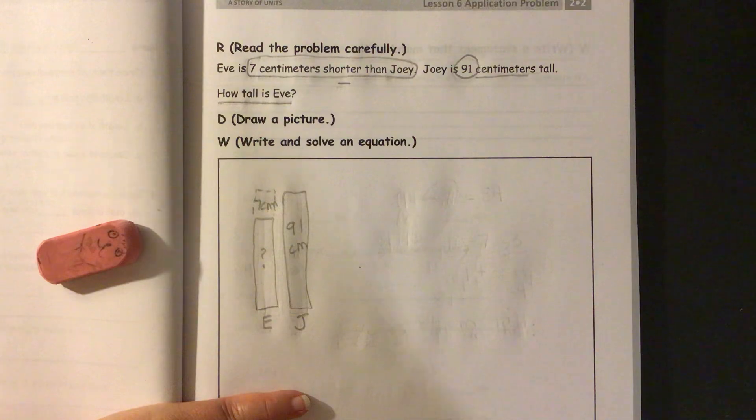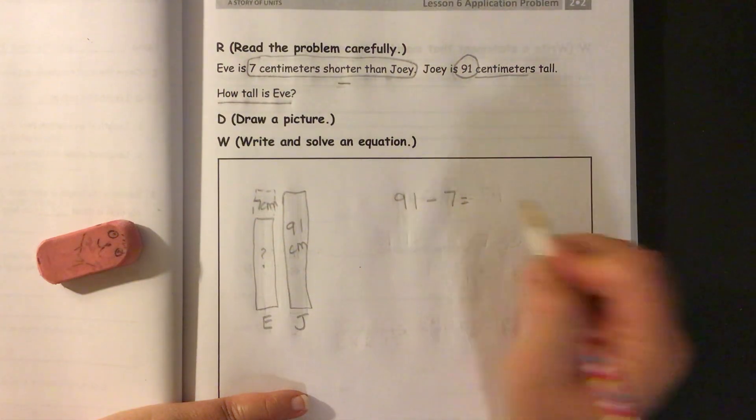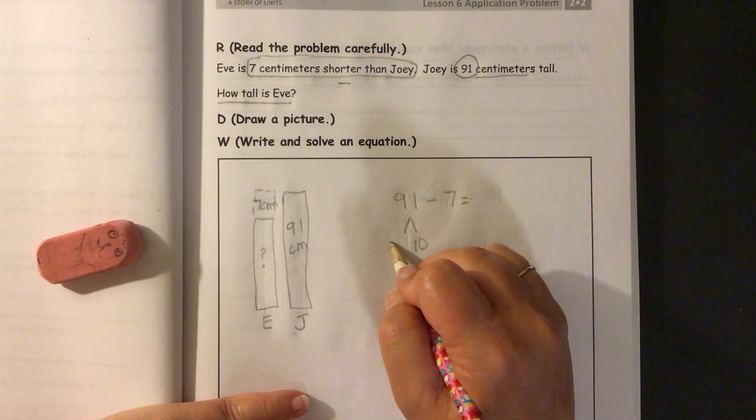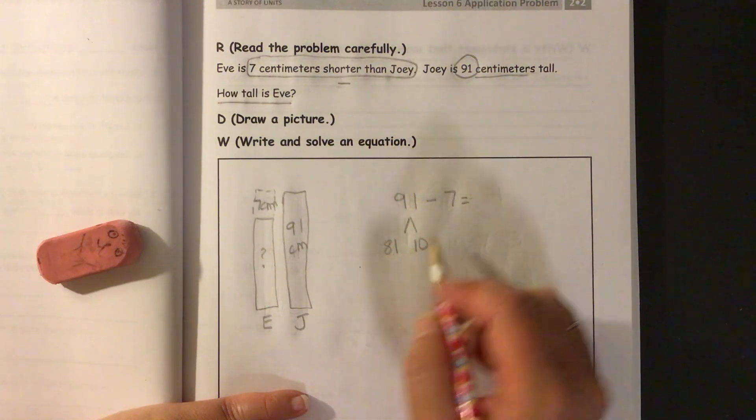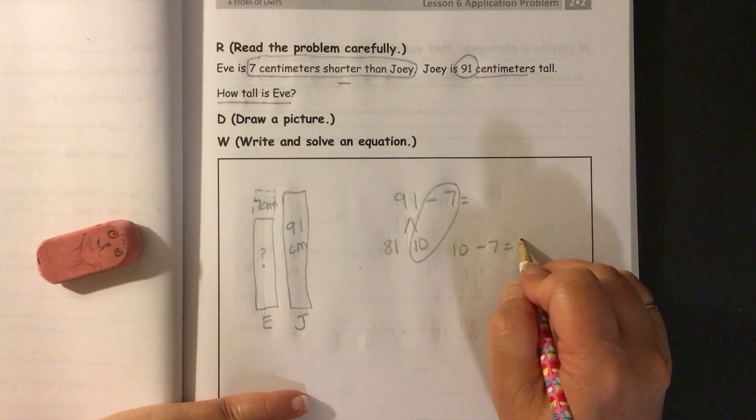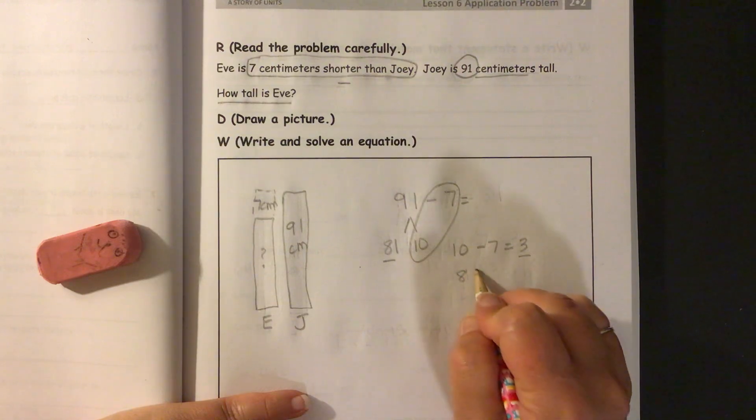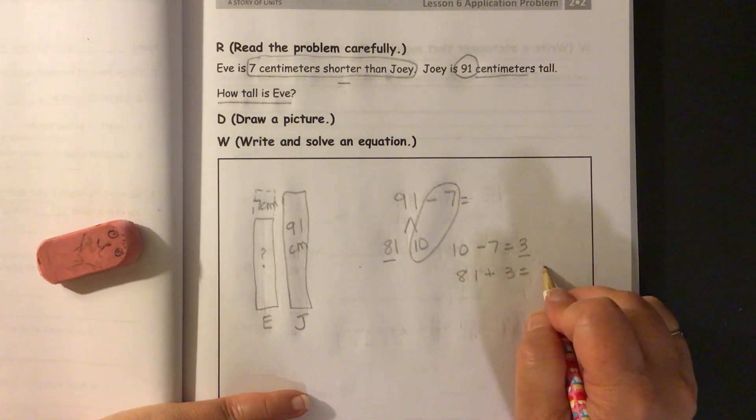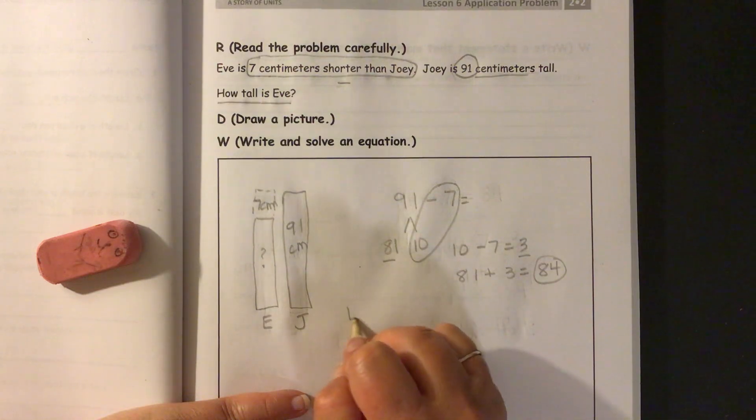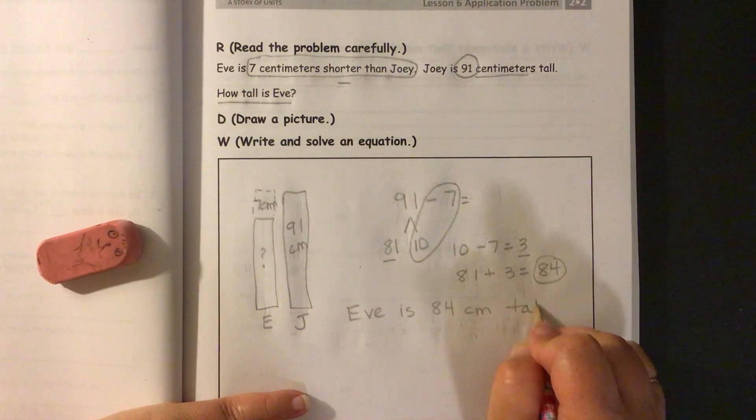So we're gonna do an equation and we figured out we're gonna do subtraction. So 91 minus seven equals, well, we'll find out. So let's take a 10. 10 plus 81 will equal 91. So we'll do our 10 minus seven equals three. And then we'll take our leftovers, 81 and three, and add them together. 81 plus three equals 84. So we know that Eve is 84 centimeters tall. So we'll write that down.